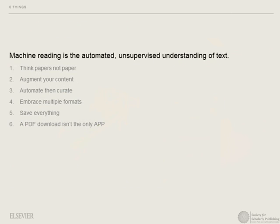To summarize: machine reading is the automated and unsupervised understanding of text. What are the implications for publishers? One: think papers, not paper. Two: think about what other kinds of content you can bring in. Three: automate and then curate. Four: embrace multiple formats. Five: collect as much data as you can — if you've got data, keep it, don't throw it away. When you stop thinking about the boundaries of the paper, you can start thinking about real drivers for scientific applications.